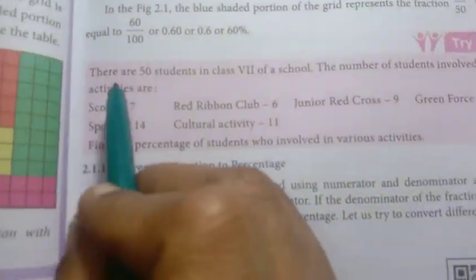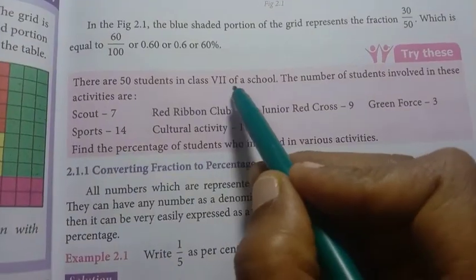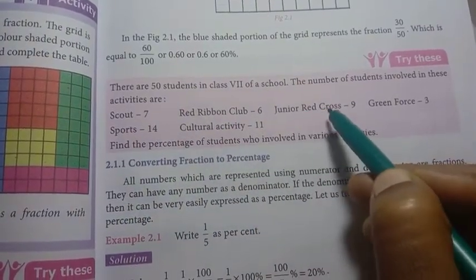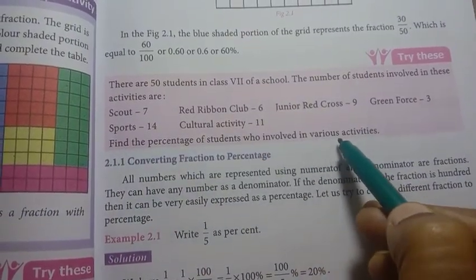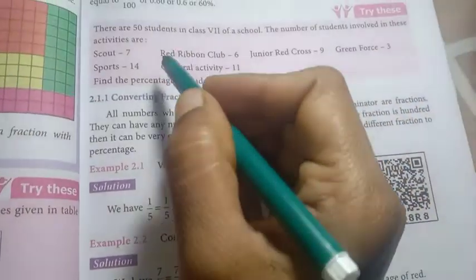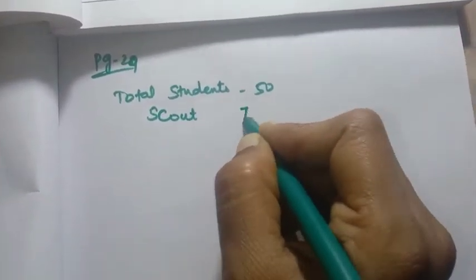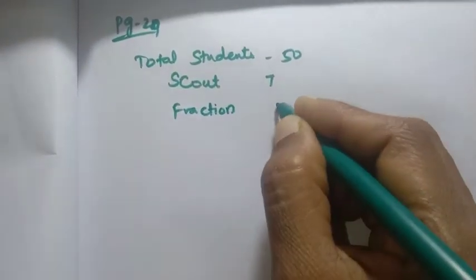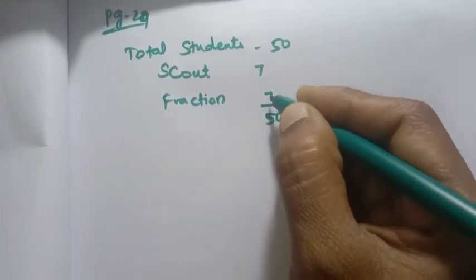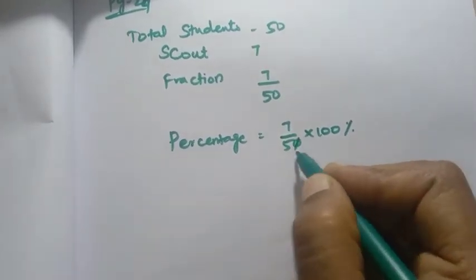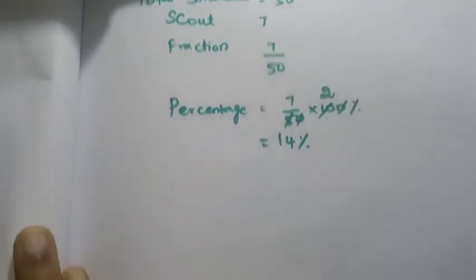Page number 29: There are 50 students in Class 7 of a school. The number of students involved in activities are: Scout — 7 students; Red Ribbon Club — 6 students; Junior Red Cross, and others. Find the percentage of students involved in various activities. Total students: 50. Scout has 7 students, so fraction is 7 by 50. Percentage = 7 by 50 into 100 = 14 percentage.